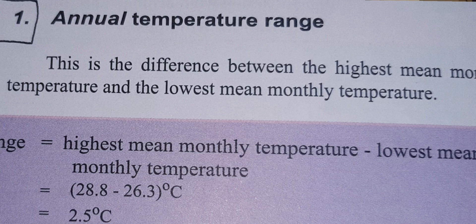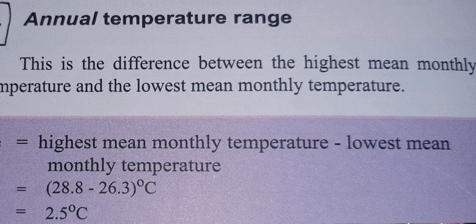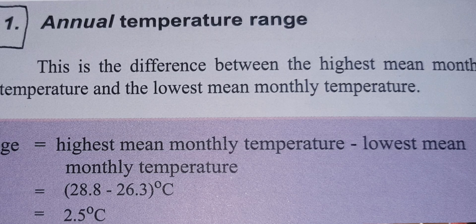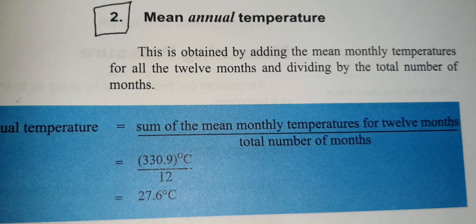Now, the annual temperature range — that is the yearly temperature range. The formula is: the highest mean monthly temperature minus the lowest mean monthly temperature. We get the answer: 28.8 minus 26.3 equals 2.5 degrees Celsius. That is the yearly temperature range.